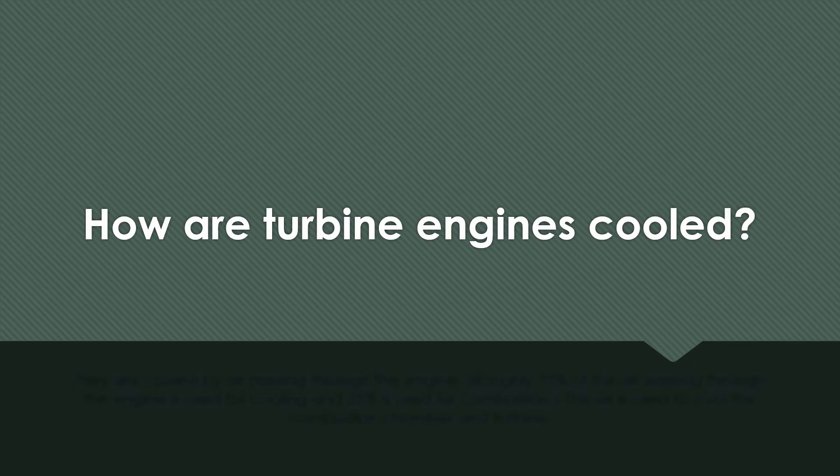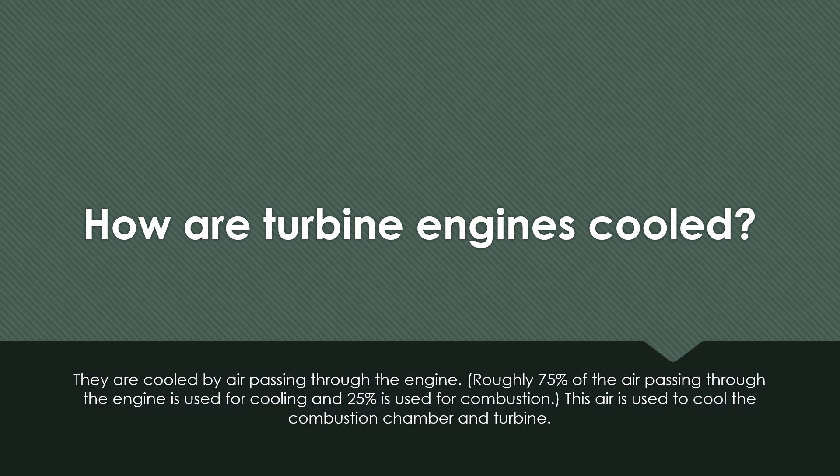How are turbine engines cooled? They are cooled by air passing through the engine. Roughly about 75% of the air passing through the engine is used for cooling, and about 25% is used for combustion. That 75% passing through is used to cool the combustion chamber and the turbine.